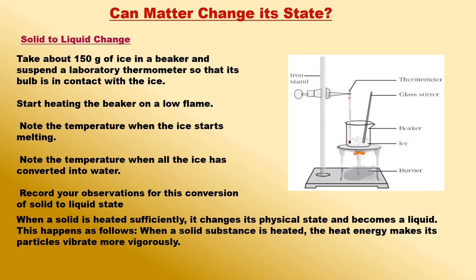The melting of a solid substance takes place at a fixed temperature. The temperature at which a solid substance melts and changes into a liquid at atmospheric pressure is called the melting point of the substance. When a solid is heated sufficiently, it changes its physical state and becomes a liquid.